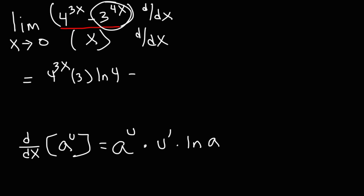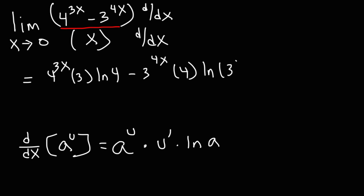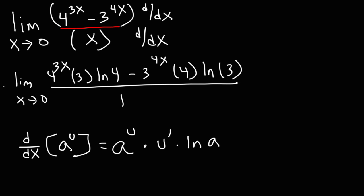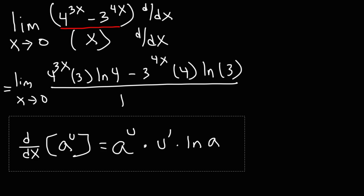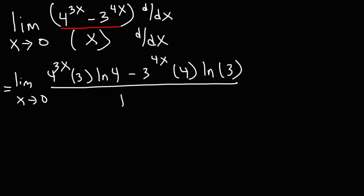Likewise, the derivative of 3 to the 4x is going to be 3 to the 4x, times the derivative of the exponent 4x which is 4, times the natural log of the base, which is ln 3. And then the derivative of x is 1. Now I need to rewrite my limit expression — we still have the limit as x approaches 0, and at this point we could use direct substitution because we're not going to get 0 over 0 anymore.